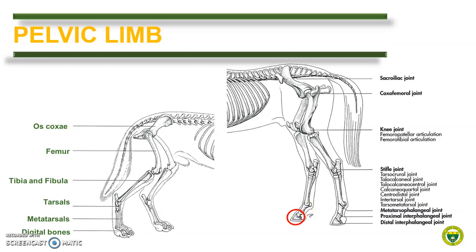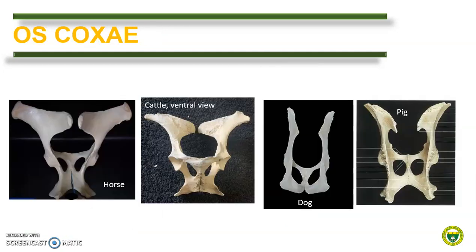The hip bone or the os coxae is composed of the ilium, ischium, and pubis. There are many ways to identify the hip bones of a specific animal, like the size and shape of the os coxae. Anatomically, we can compare the hip bones by identifying the orientation of the gluteal surface and the number of gluteal lines at that particular gluteal surface. In cattle and horse, the gluteal surface is facing dorsally. In pigs and dogs, the gluteal surface is facing laterally. Please bear in mind that there are three gluteal lines in carnivores and one gluteal line in the rest of the domestic animals.